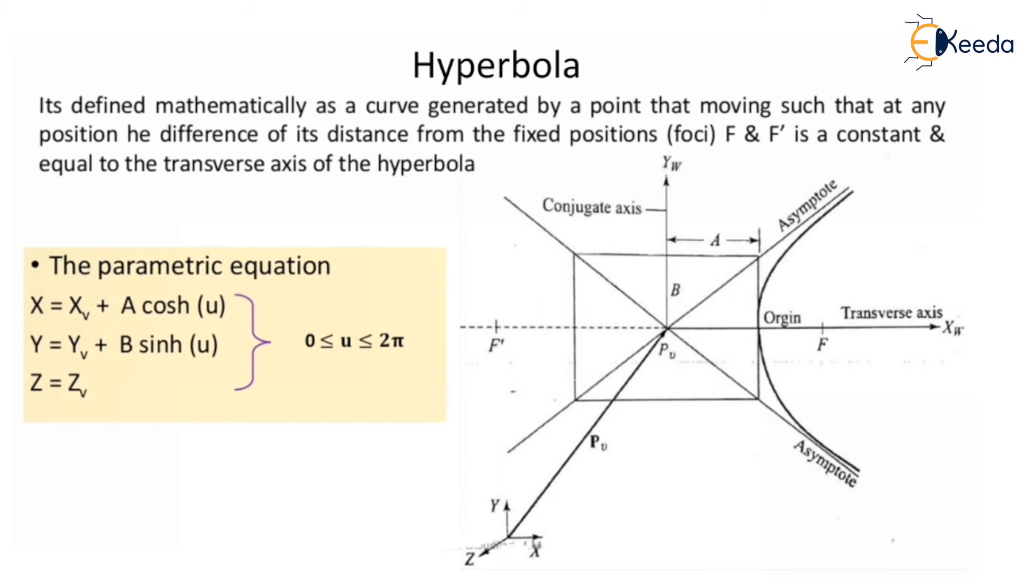Hyperbola is defined mathematically as a curve generated by a point moving such that at any position, the difference of its distance from fixed positions, the foci F and F', is constant and equal to the transverse axis of the hyperbola. There is also a conjugate axis.